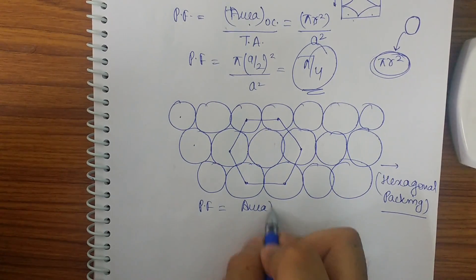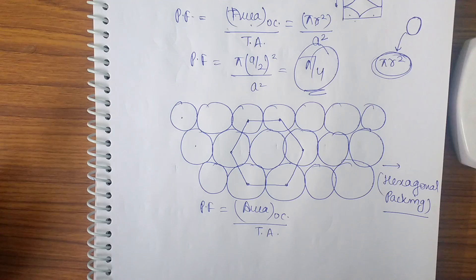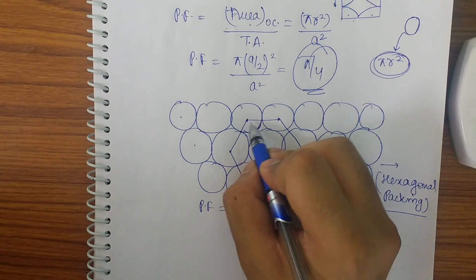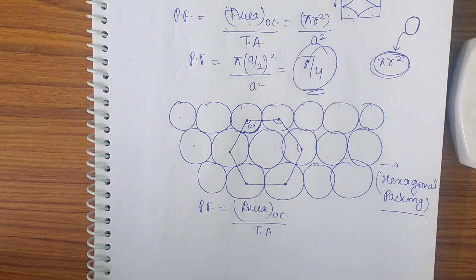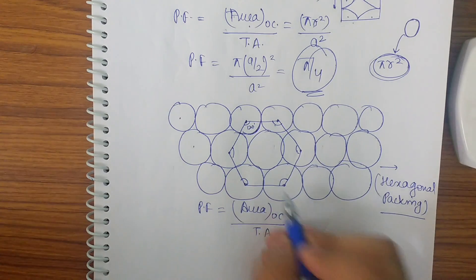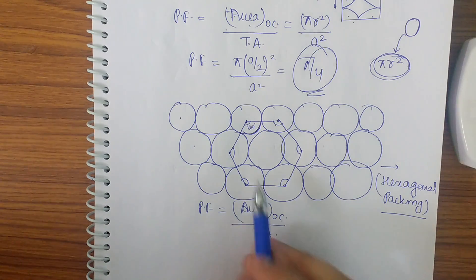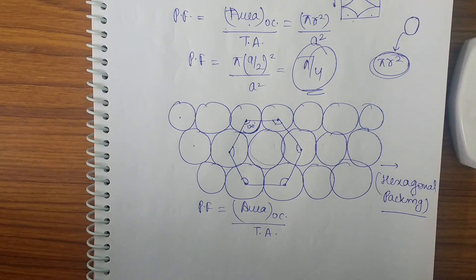For hexagonal packing, the packing fraction = area occupied / total area. To find the area occupied: each corner sector is 120°, and three such sectors together make 360°, completing one full circle. This happens at three sets of corners, giving us a total of 3 circles. So area occupied = 3πr².